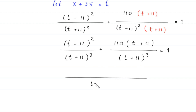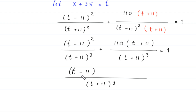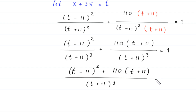We write the common denominator, which is t plus 11 whole cubed. So t minus 11 whole squared plus 110 times t plus 11, is equal to 1.